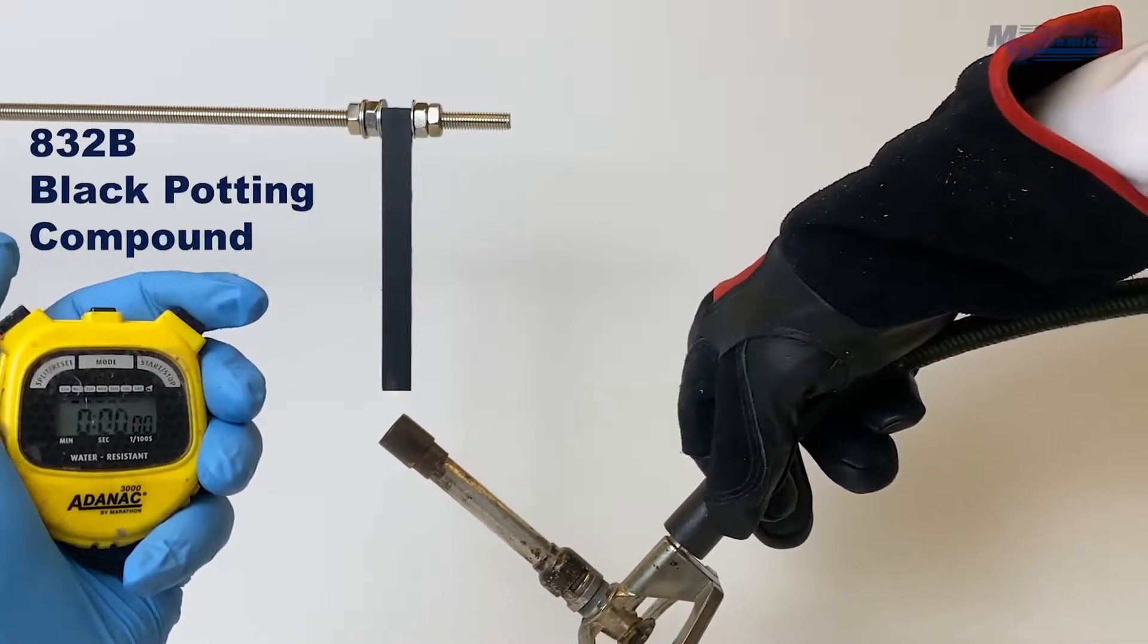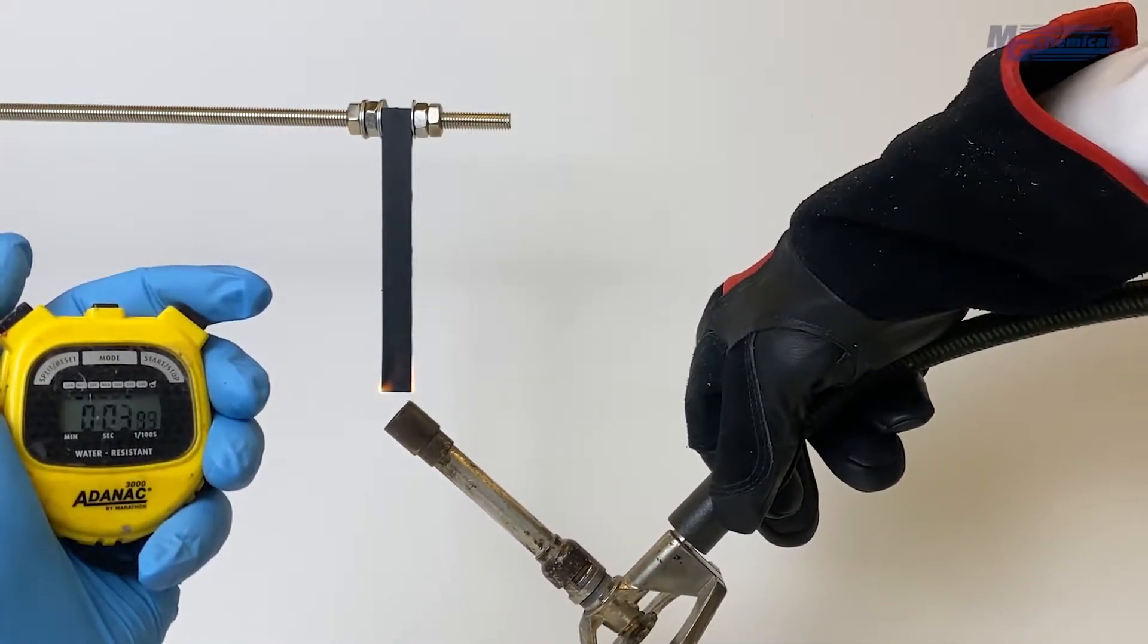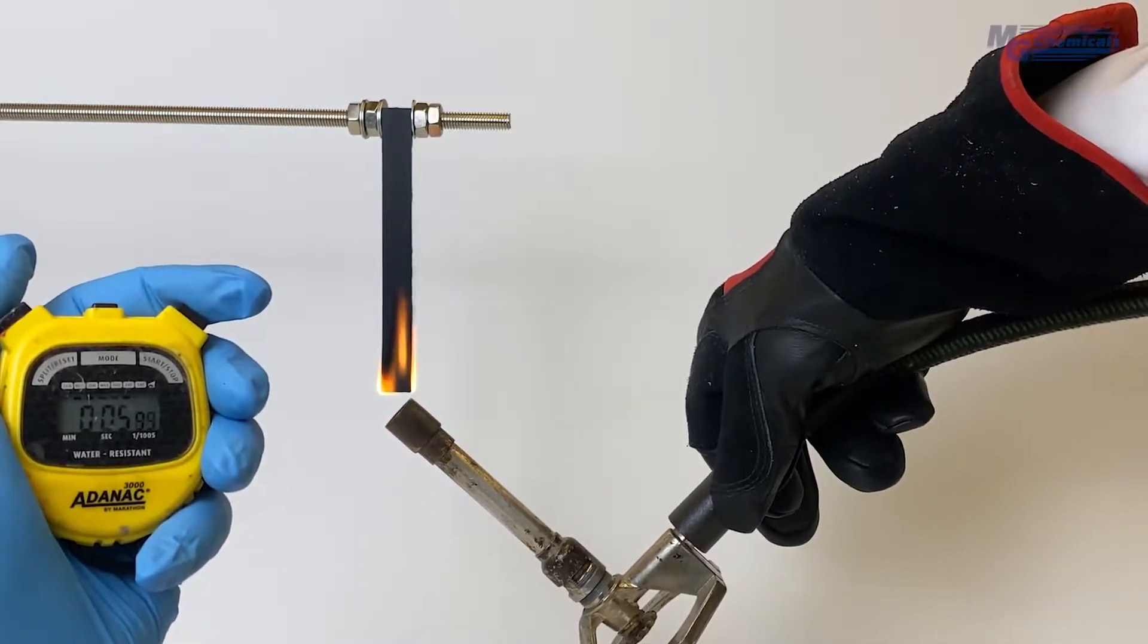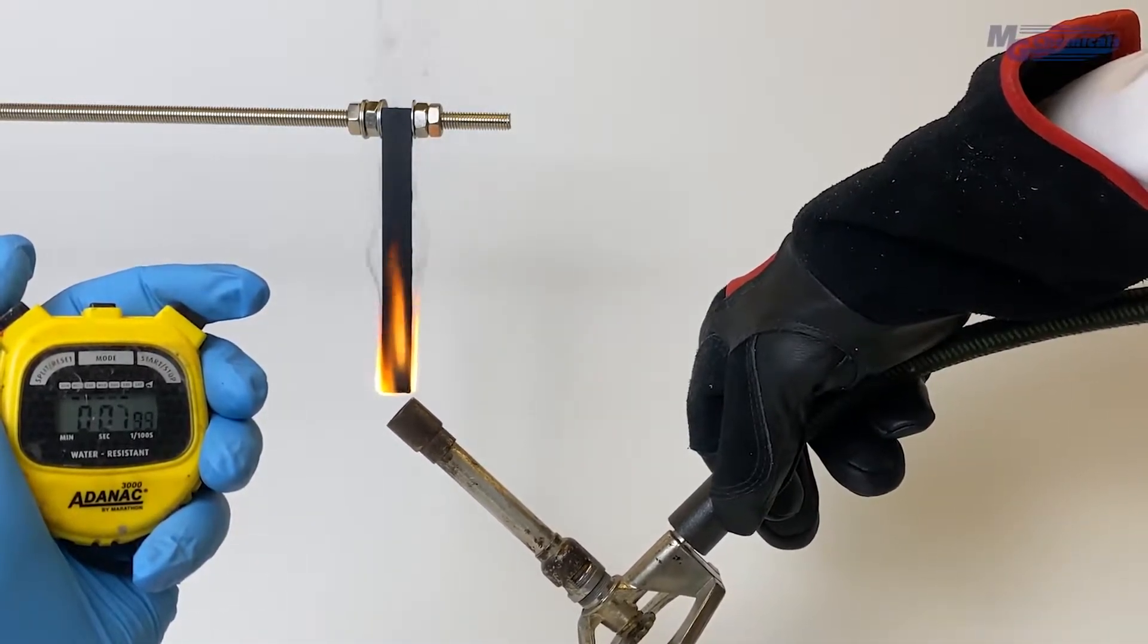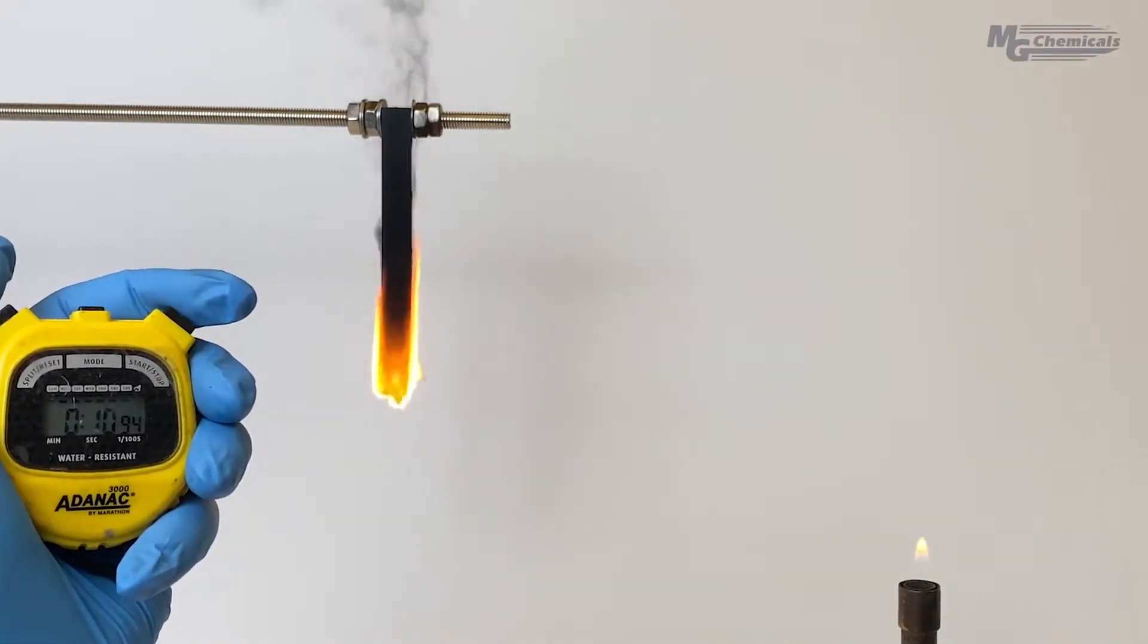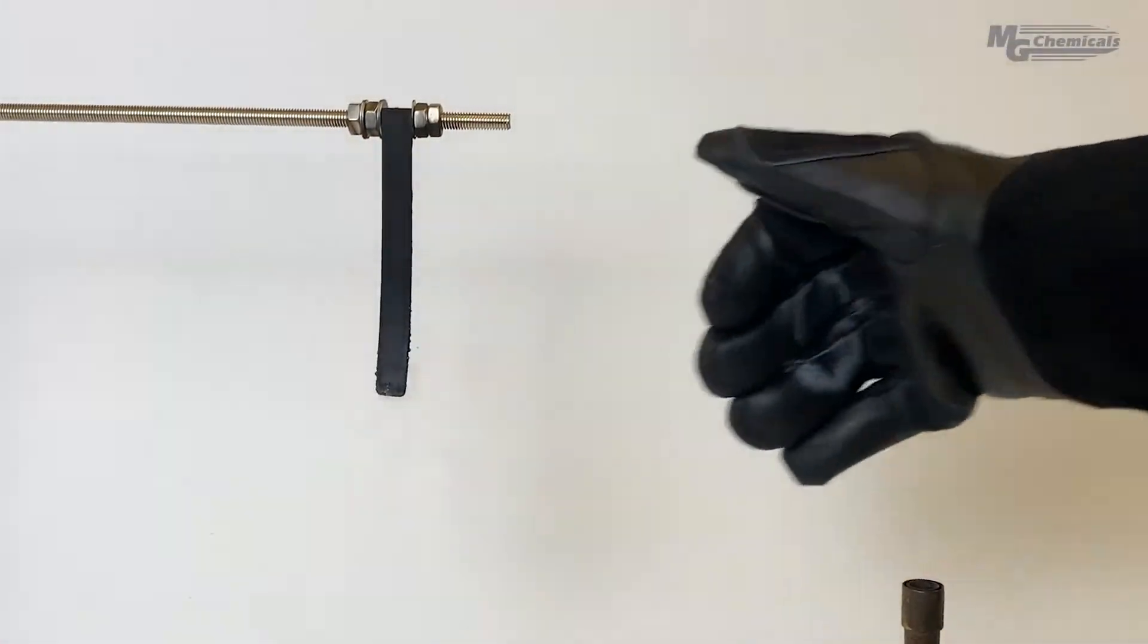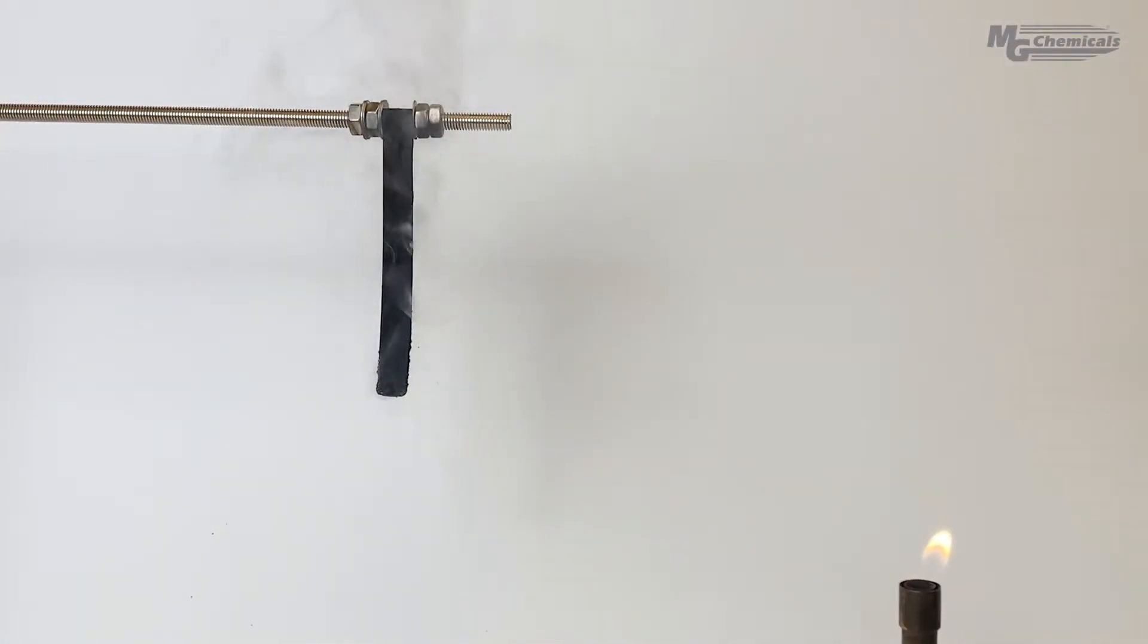In our first example, let's look at what happens to 832B, a general purpose epoxy, when we run it through the test. In step one, we hold the flame to the sample for 10 seconds and then remove, waiting for the flame to extinguish. Here, we quickly see the flame spread through the sample, reaching an uncontrollable burn. This would be considered a fail.